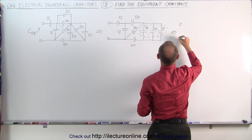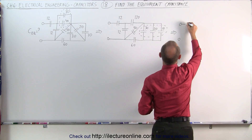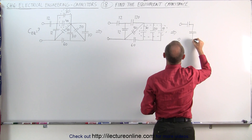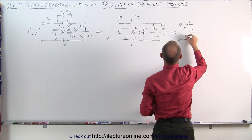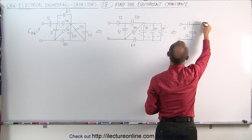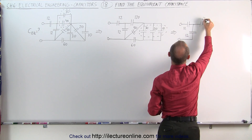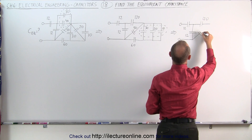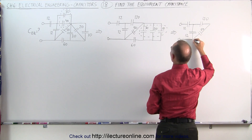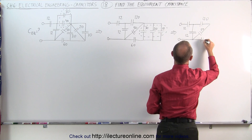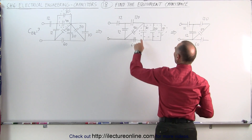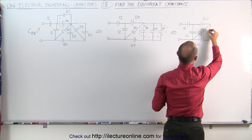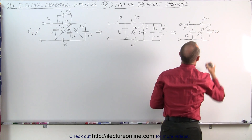This circuit can now be redrawn as follows. We have a 12 microfarad capacitor, another 12 — so these are both 12 microfarads. We still have our 120 microfarad capacitor. This one is 50. Then we have this one here, which is a 60 microfarad capacitor. And now when we combine those three together, we now have a single 60 microfarad capacitor.